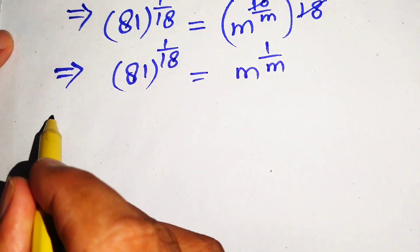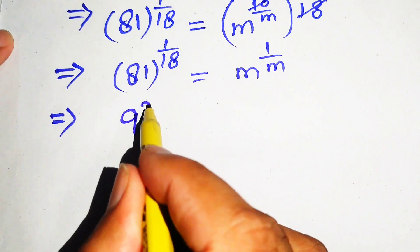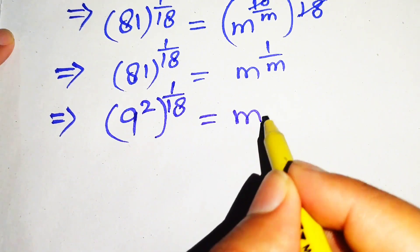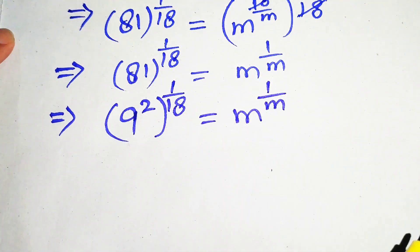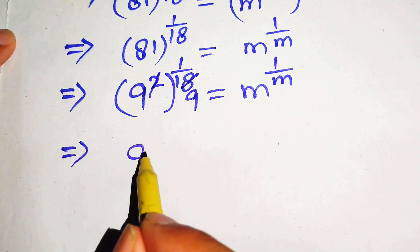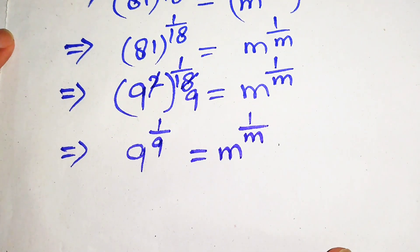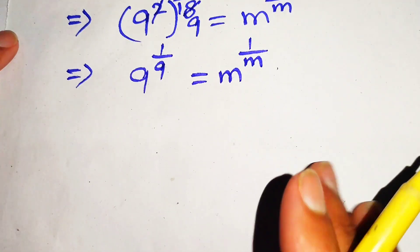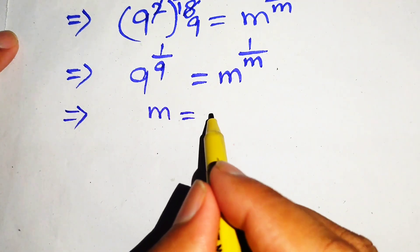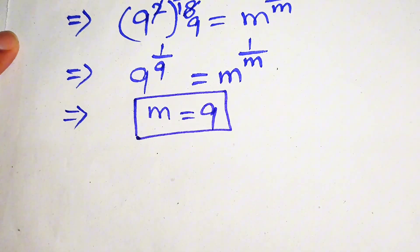We rewrite the left hand side: since 9 squared equals 81, we write it as 9 squared, whole power 1 over 18. The 2 cancels with 18, giving 9 to the power of 1 over 9 equals m to the power of 1 over m. Comparing both sides, we easily get m equals 9. This is the first solution by method one.